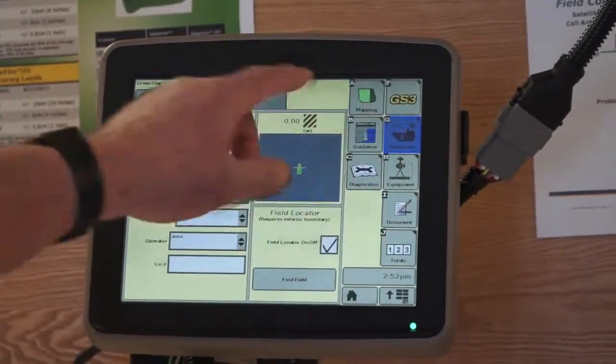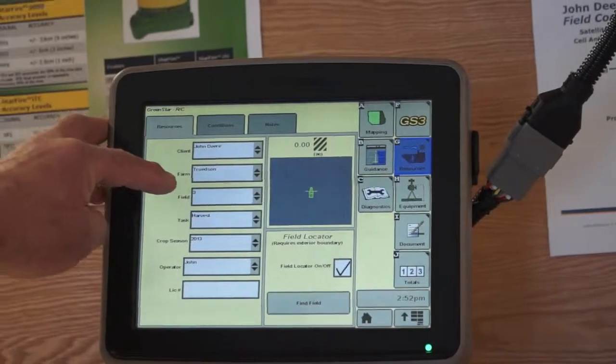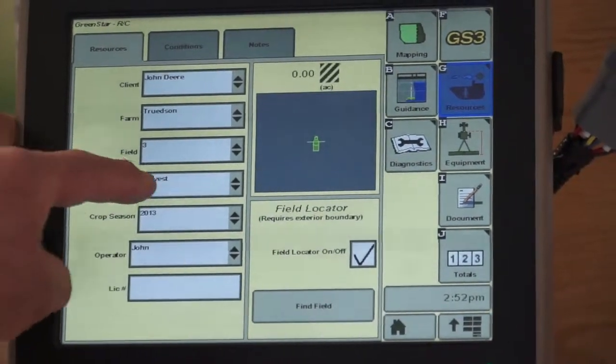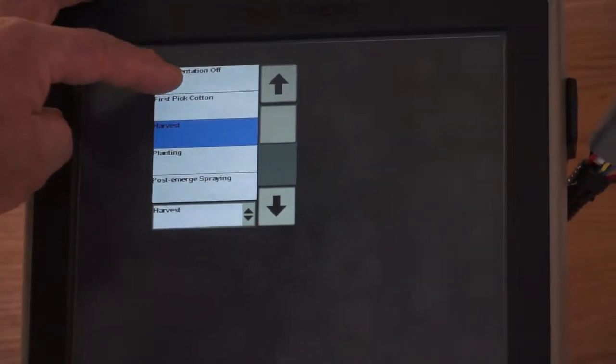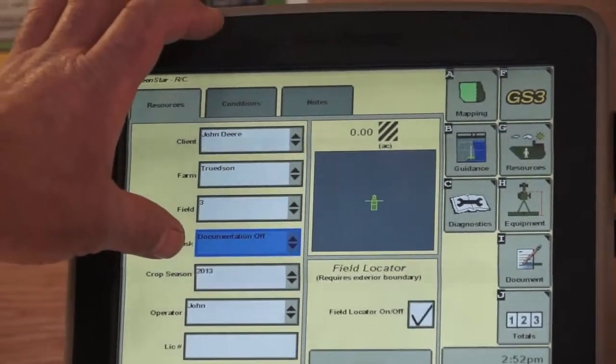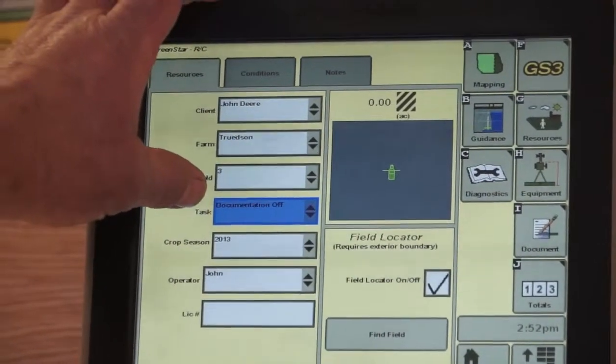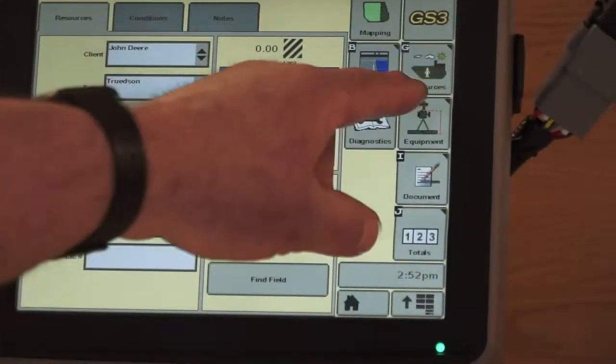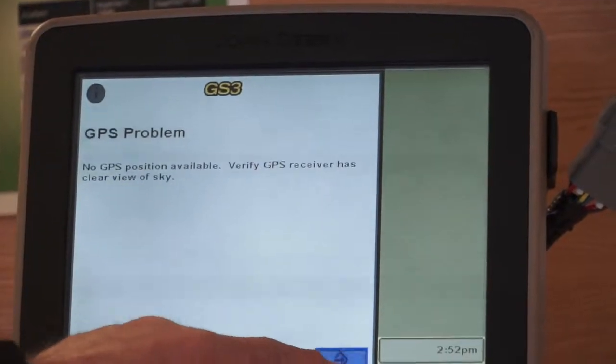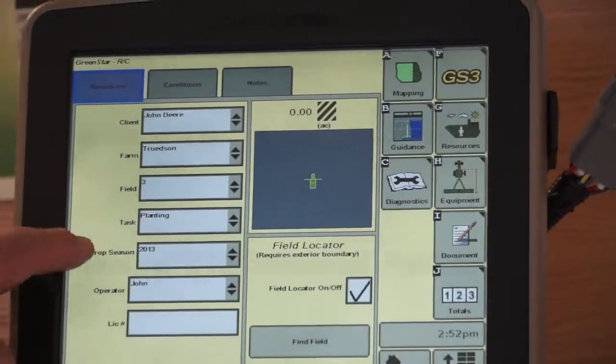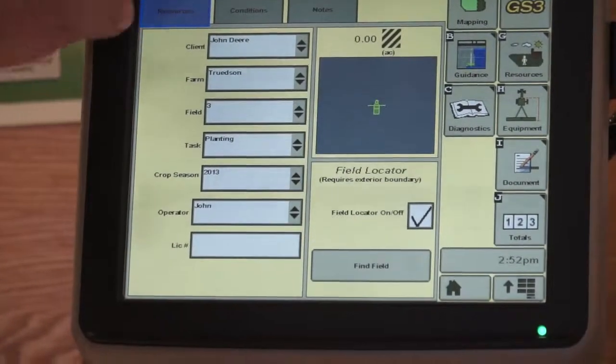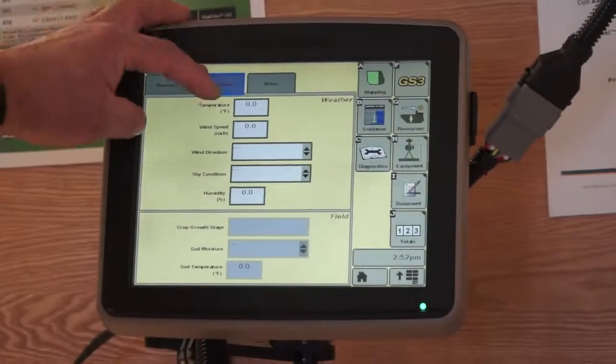Under resources, if I touch that, client, farm, and field must be filled out and populated. Task must be populated. Or if I'm just running off a height sensor on an implement and all I want is documentation of acres planted, I can turn my documentation off. Then the rest is not so important. But if I am planting, it's important to have that filled out properly. Crop season and operator are not critical. The client, farm, field, and task are.